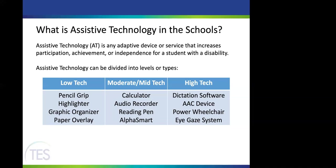For high tech, these are what most people truly think of as assistive technology — things like dictation software, an augmentative communication device, a power wheelchair, or an eye gaze system to access the computer. While high tech is what most people think of, all three categories — low, mid, and high — can be defined as assistive technology.